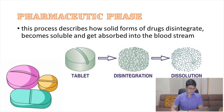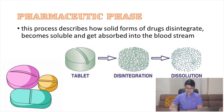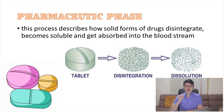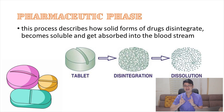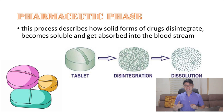Let's talk first about the pharmaceutical phase. The pharmaceutical phase describes how solid forms of drugs disintegrate, become soluble, and get absorbed through the bloodstream. This process involves two sub-processes: disintegration and dissolution. The pharmaceutical phase only applies to medications that are being ingested or orally taken — because in order for oral medications to pass the semi-permeable layer of your gut for absorption, they should be converted to a soluble liquid form.